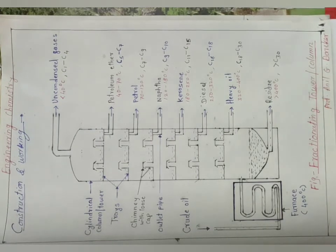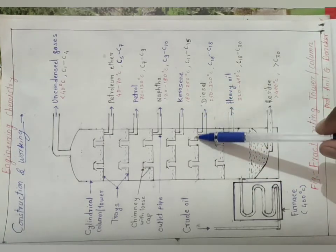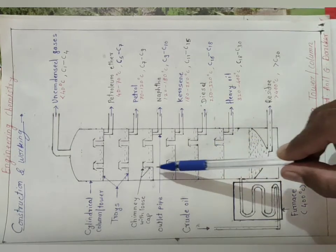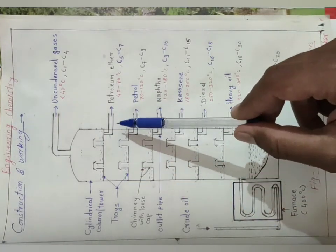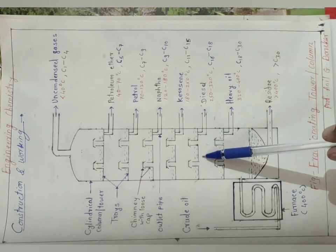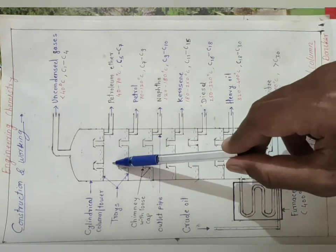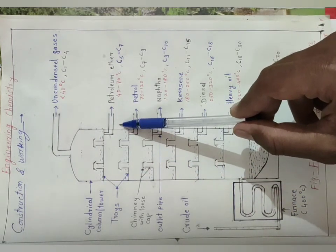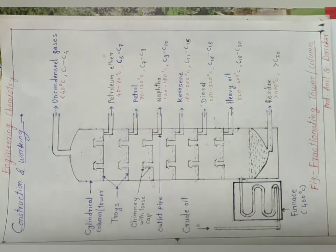So in this way, we studied fractional distillation. Simple concept you keep in mind: higher boiling point compounds condense at the bottom and lower boiling point compounds condense at the top. Low boiling point, upper portion. Thank you for watching and being with me. Thank you.